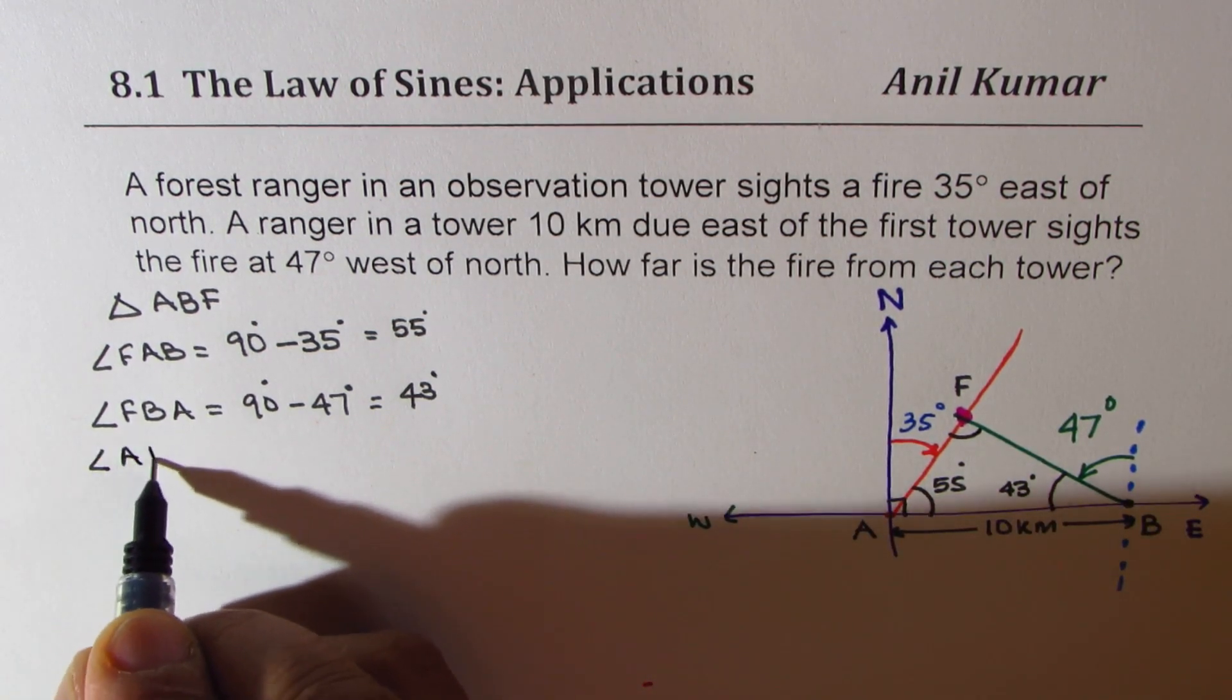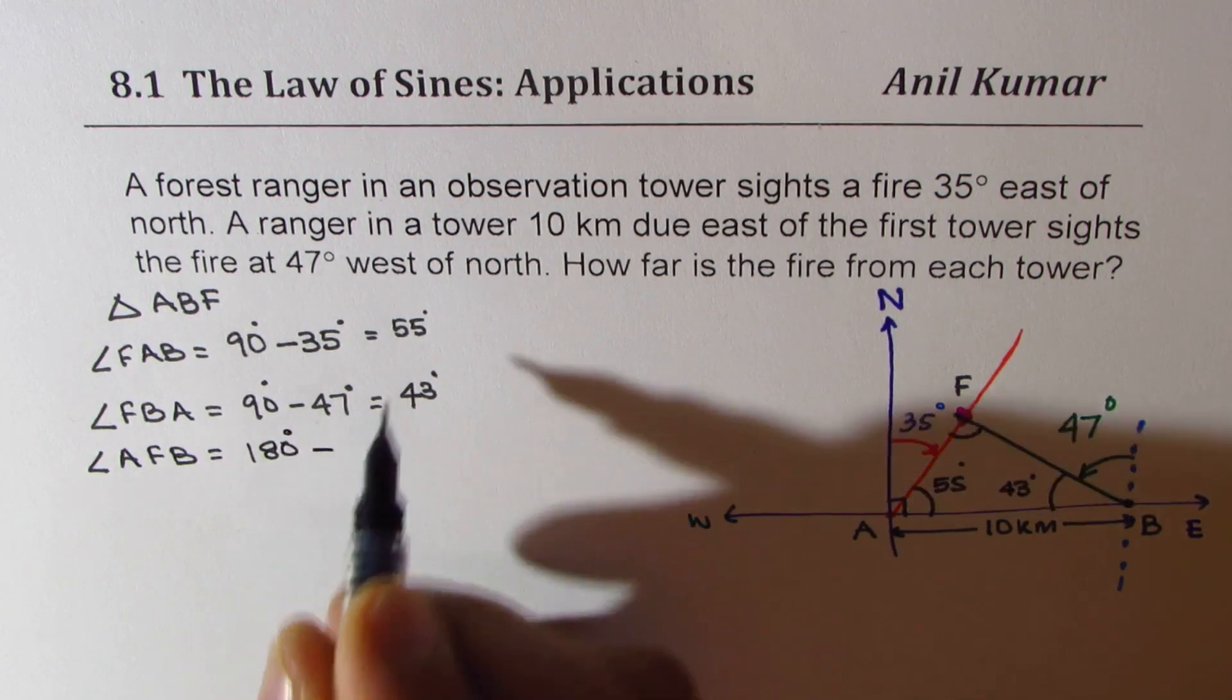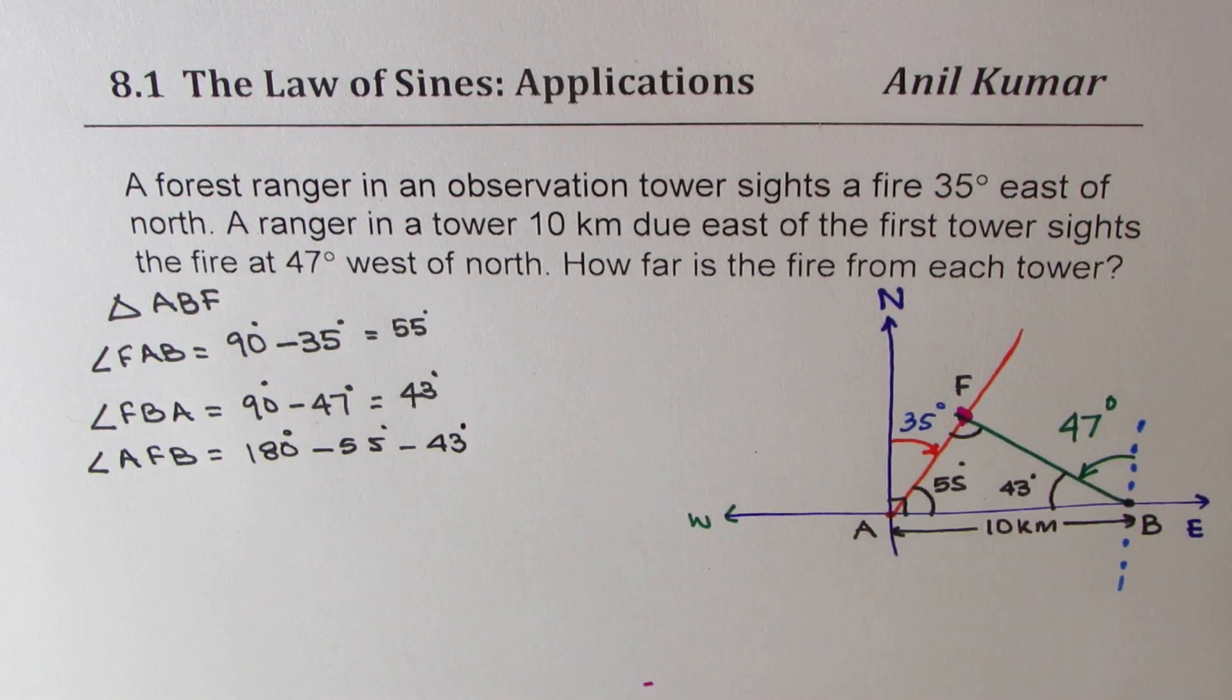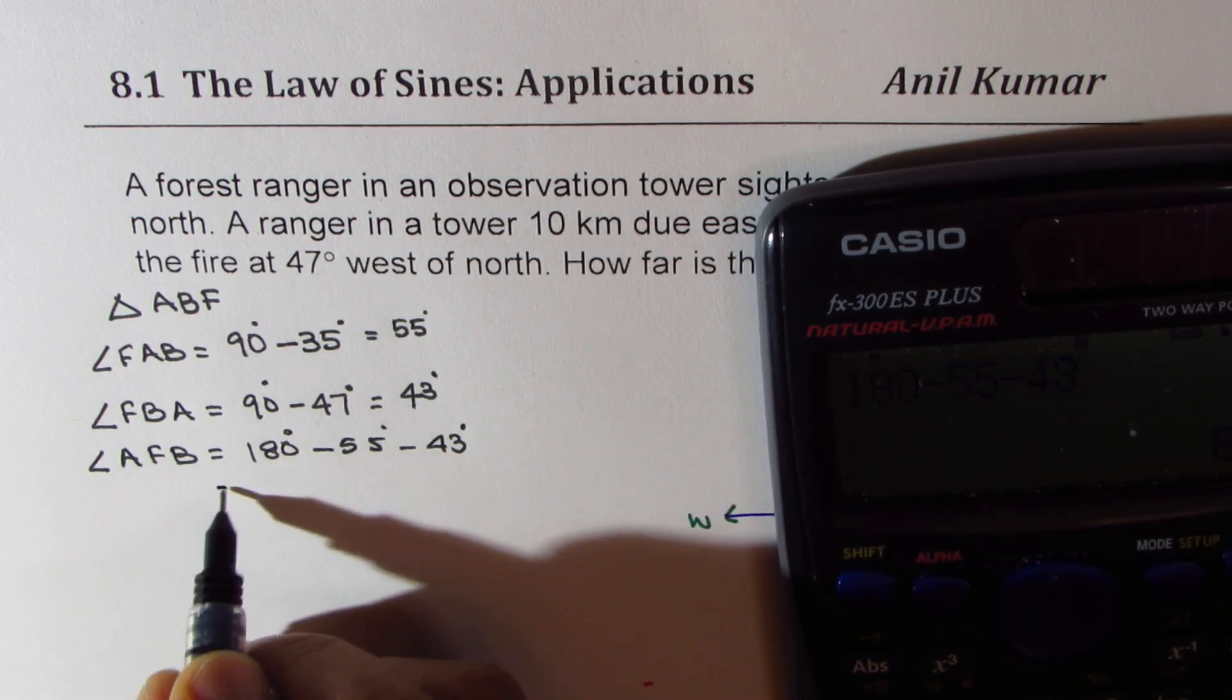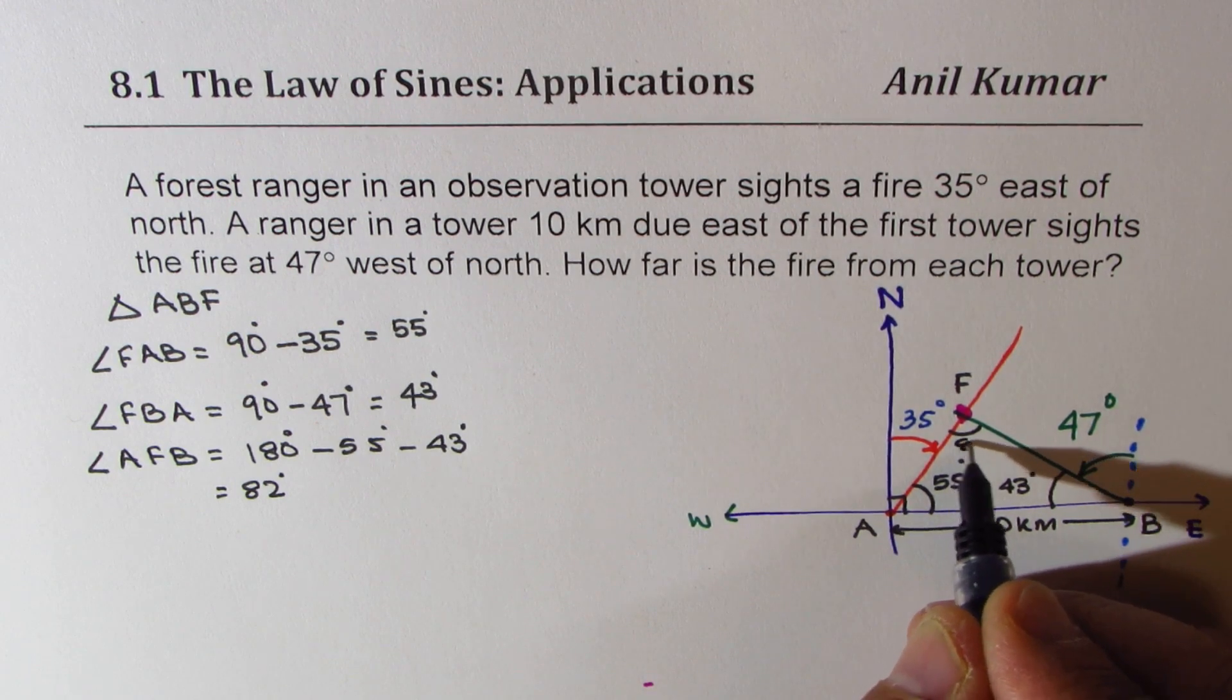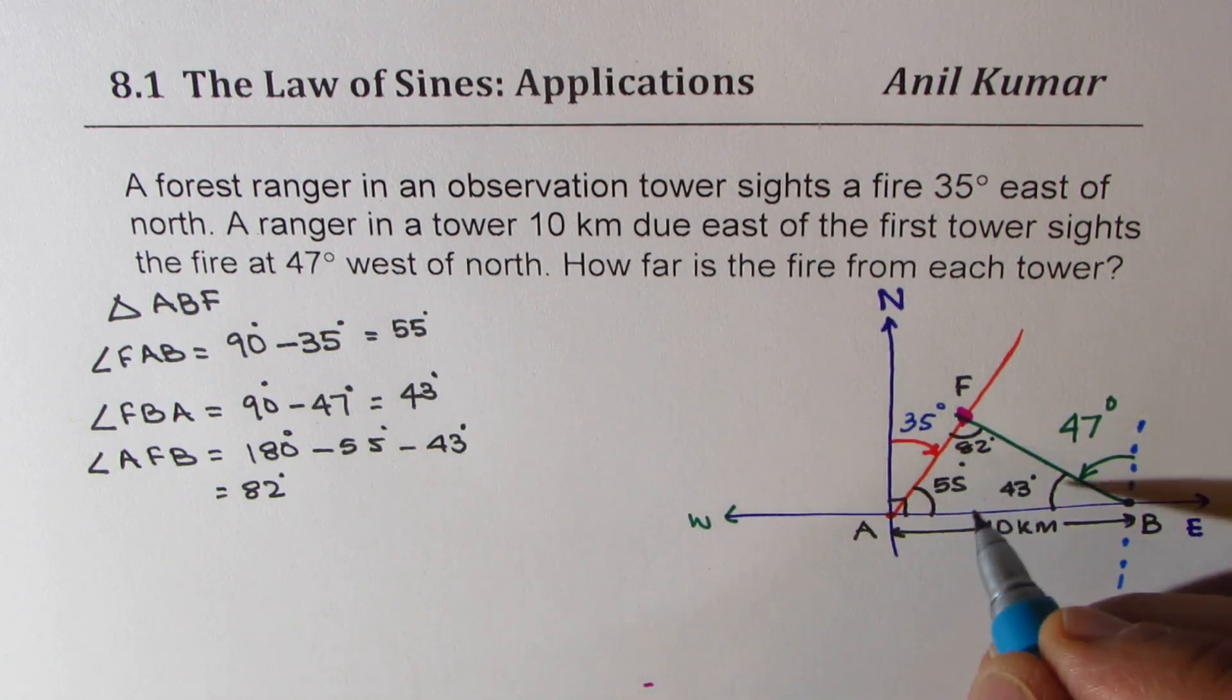That is angle AFB should be equal to 180 degrees minus these two. So let's calculate this. 180 minus 55 minus 43 equals 82 degrees. So we know the angle which is opposite to the given side. This is a very important combination. So the key is to find this combination.